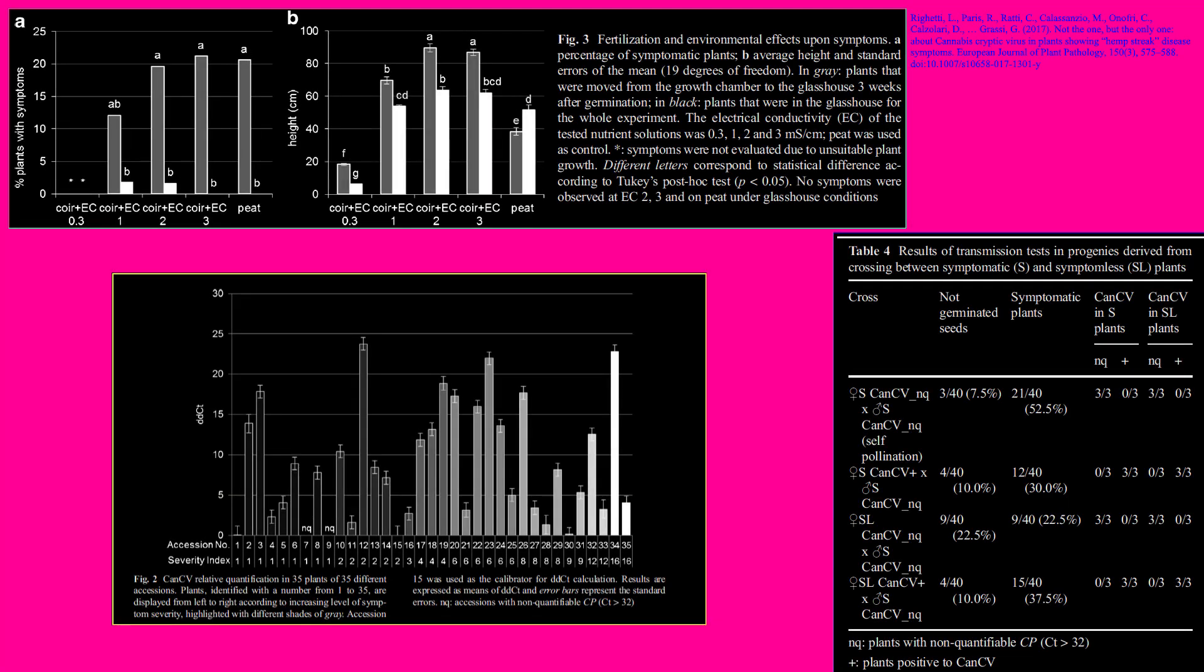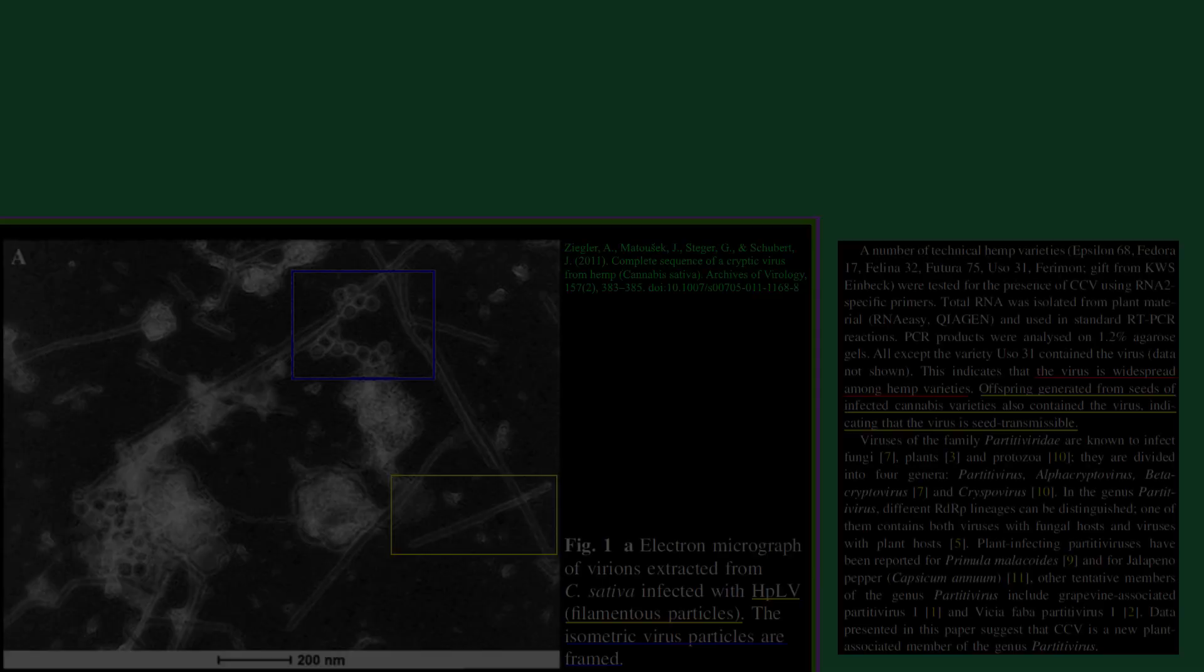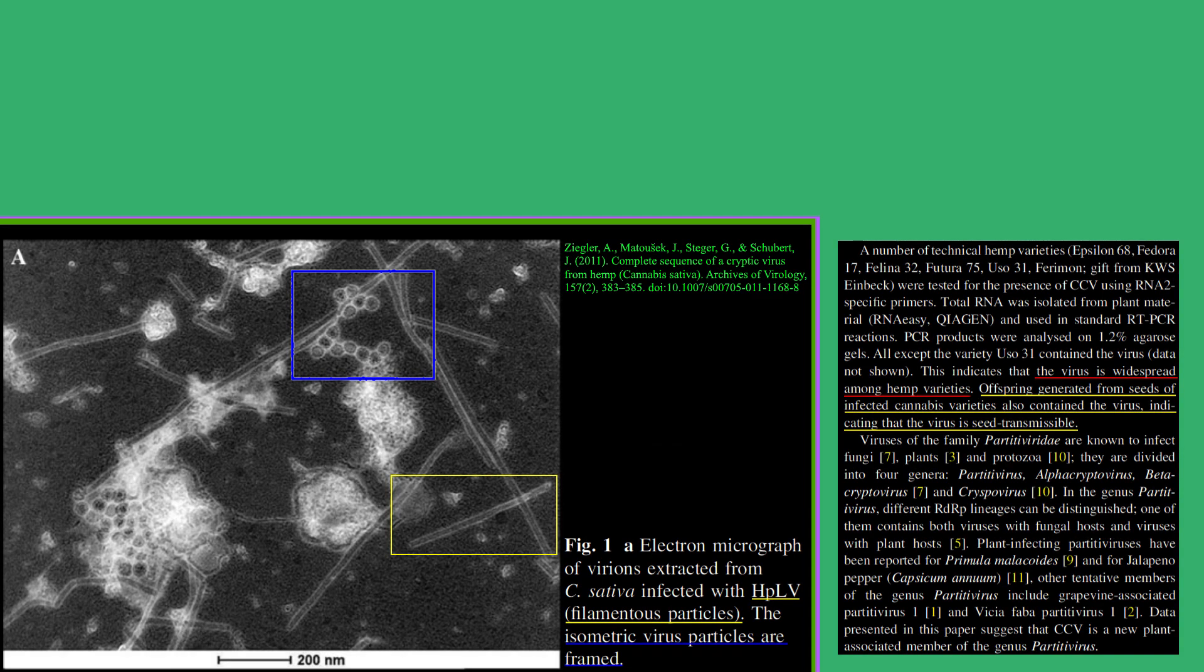It does not appear to be able to pass horizontally via physical contact with infected hosts, but is vertically transmitted via seed and is considered likely to be widespread in many hemp cultivars. It is not believed to be the causal agent for the streaking symptoms referred to as hemp streak. Not much is known about it as of this recording.